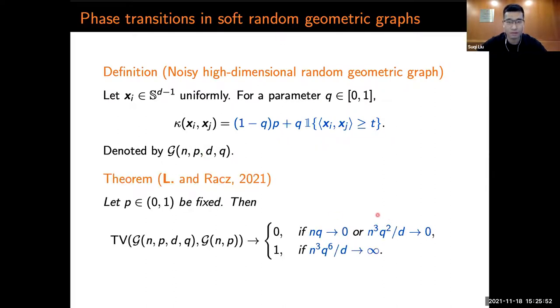Q here can also be viewed as the signal-to-noise ratio in the graph. We denote the model by G(n,p,d,Q). We show that in certain parameter regimes, the total variation distance goes to zero, while in other regimes, the total variation goes to one. Note here, if we choose Q to be decaying at some order of N, then the dimensional threshold for the phase transition is actually lower than n^(2/3).